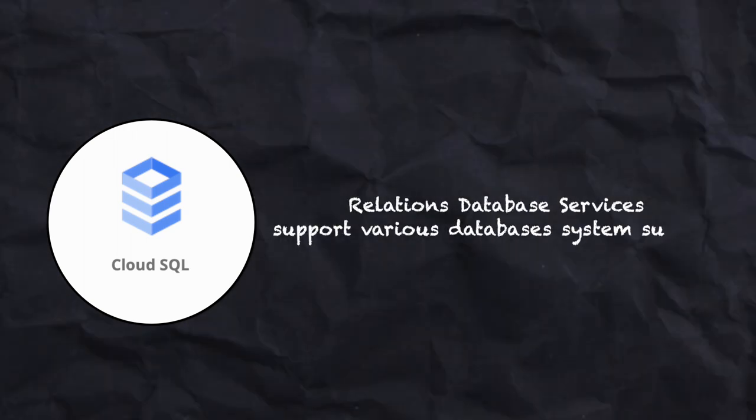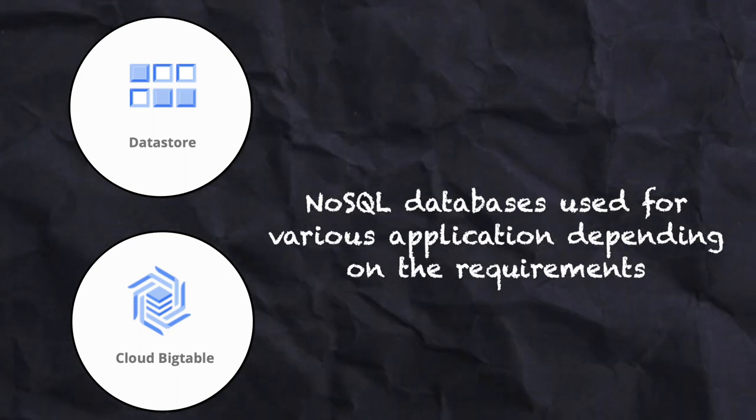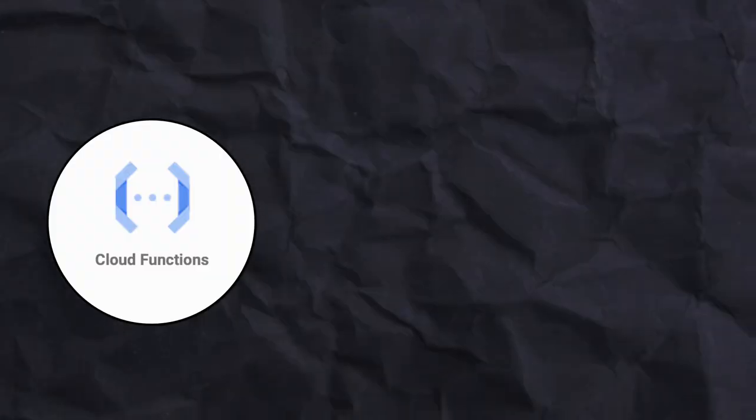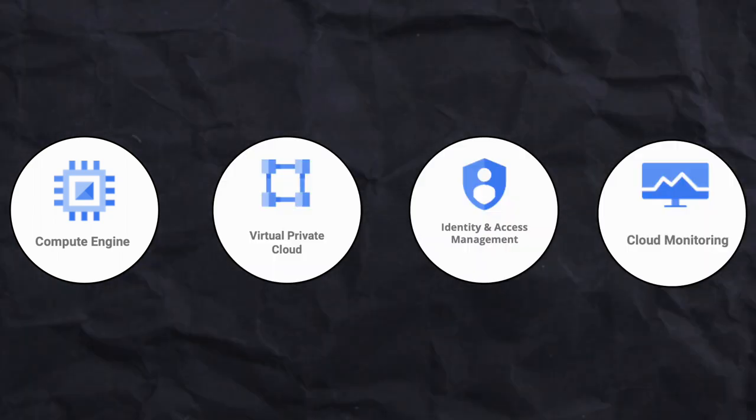There are also some other foundational services that are important to know: Cloud SQL, the relational data management service that supports various database systems such as PostgreSQL and MySQL; Datastore and Bigtable, both NoSQL databases used for various applications depending on the requirement; Cloud Composer, which lets you run Apache Airflow on the cloud without worrying about installation or scaling — it is a managed service provided by Google; Cloud Functions, an event-based compute service similar to AWS Lambda, which lets you run code based on a trigger; and other important services such as Compute Instance, VPC (Virtual Private Cloud), IAM, Stackdriver, and many more. These are core fundamental services that will help you become a better engineer.